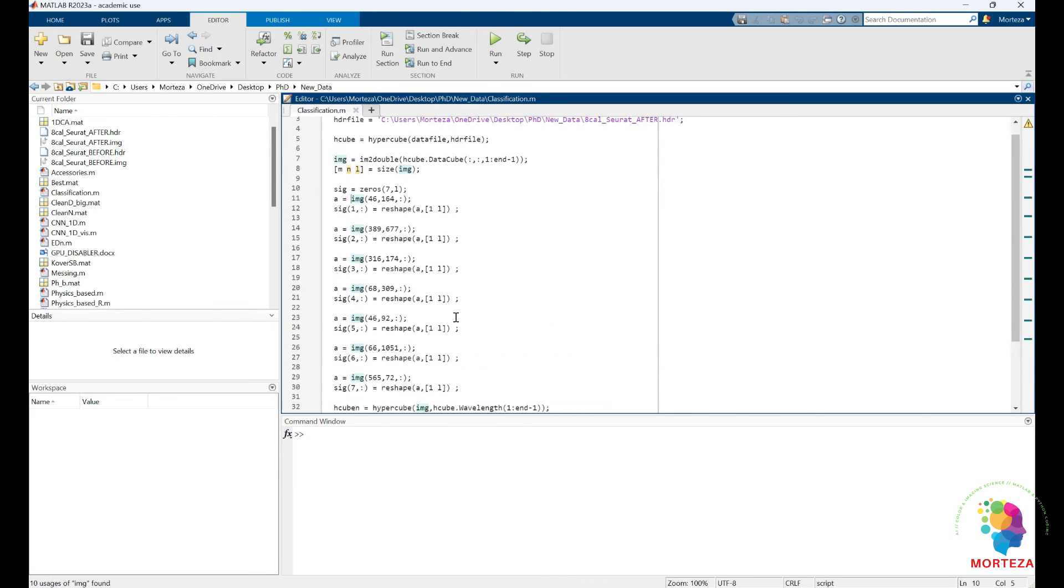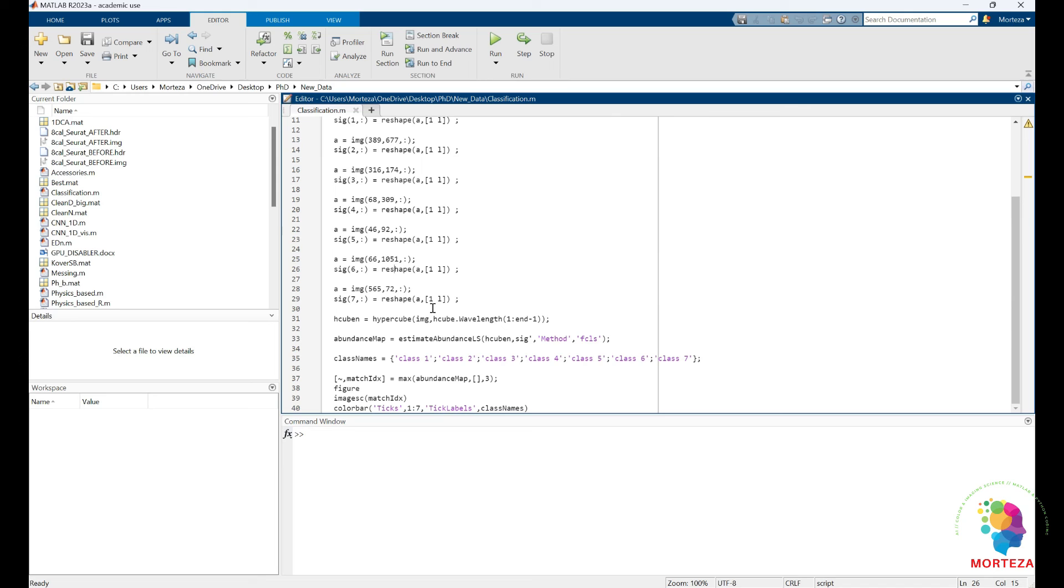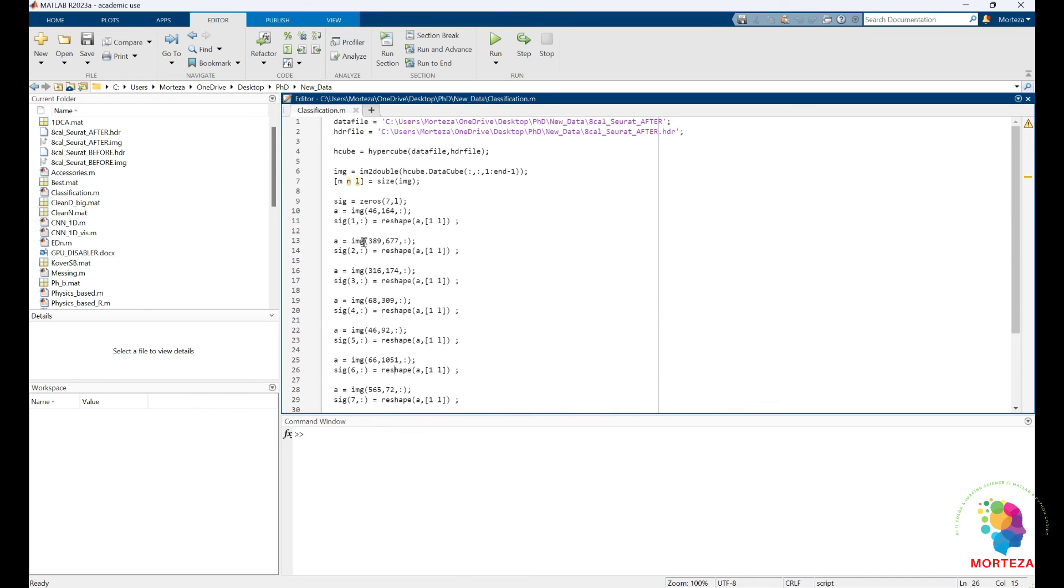So this is very simple. It is not the most scientifically approved method, especially the way I choose the end members. But as long as you have someone in your group who knows where the end members are in your hyperspectral image, you are fine. You could do the same method. Okay, let's run it and see what happens.